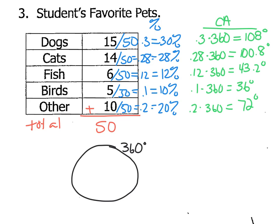To double-check our work, we can add up all these degrees and make sure they add up to 360 — excuse me, they shouldn't add up to 180, they should add up to 360, which in my case they did. So that checks out. The next thing I would do is put a dot in the center of my circle, draw my radius out to the side, and then line up the protractor and start drawing the angles.